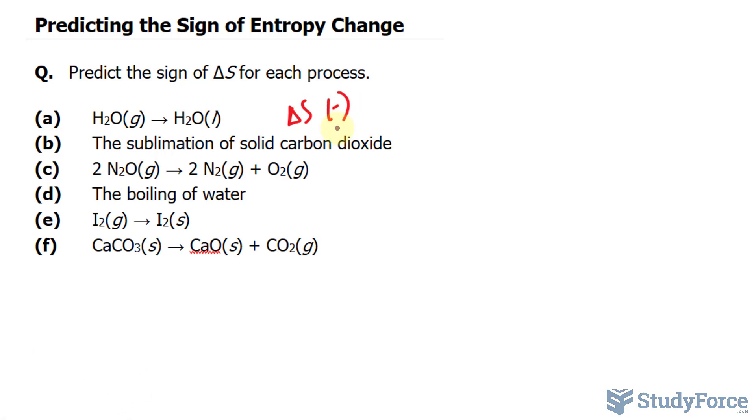The sublimation of solid carbon dioxide. Sublimation is the process of going from a solid, skipping the liquid phase, and right into gas. Since a solid has a lower entropy than a gas, the entropy increases and delta S is positive. When entropy increases, we have a positive value.